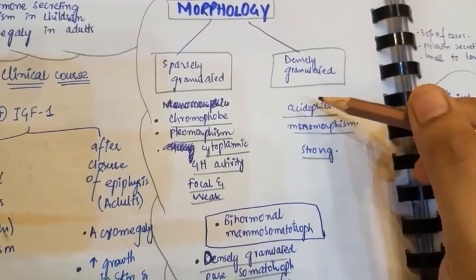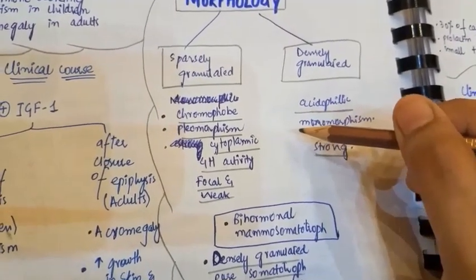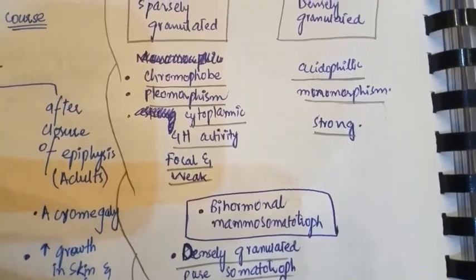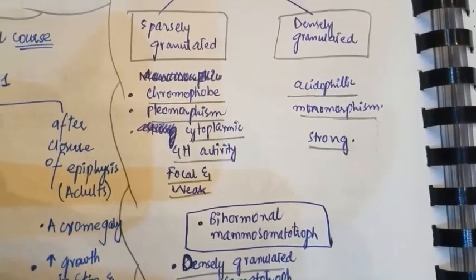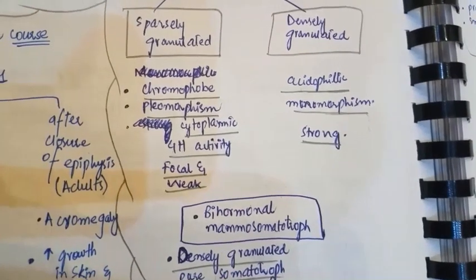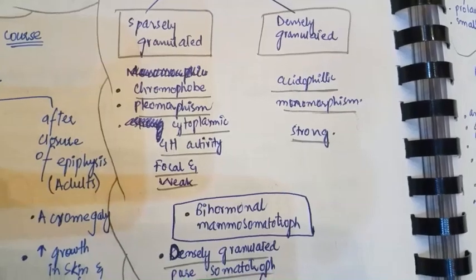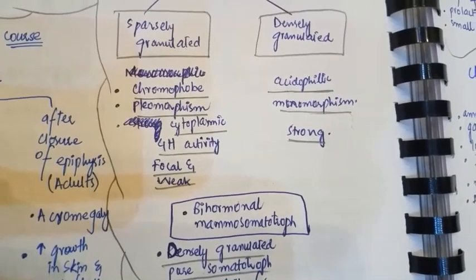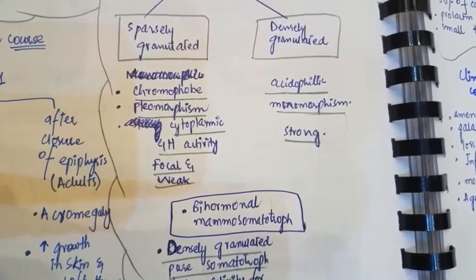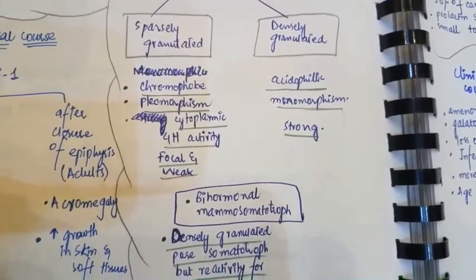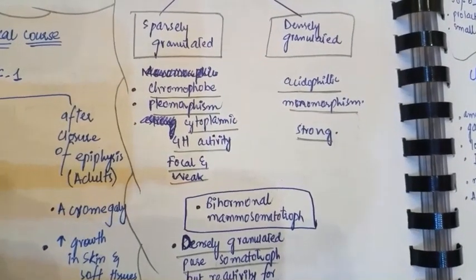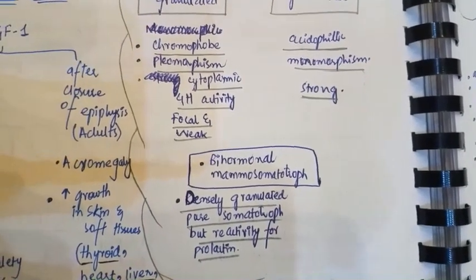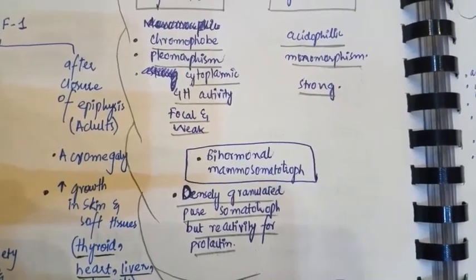In sparsely granulated adenomas there will be pleomorphism in the cytoplasm, while in densely granulated adenomas there will be monomorphism. On immunofluorescence, growth hormone activity in sparsely granulated adenomas will be focal and weak, while in densely granulated adenomas the growth hormone activity will be strong. Mammosomatotroph adenomas are basically densely granulated pure somatotroph adenomas that also show reactivity for prolactin.